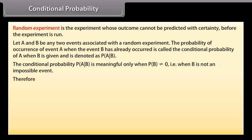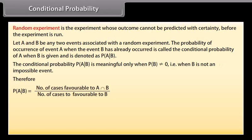Therefore, the conditional probability of event A given event B is equal to the number of cases favorable to event A intersection event B divided by the total number of cases favorable to event B.